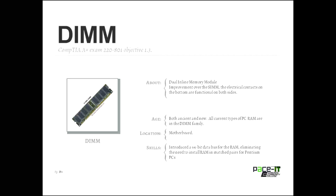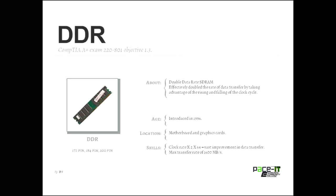From the standard DIMM is where we got DDR — Double Data Rate SDRAM. It effectively doubled the data transfer rate by taking advantage of the rising and falling edge of the clock cycle. That means you could perform an operation on the up tick and on the down tick. DDR was introduced in 1996 and was mainly found on motherboards and graphic cards.